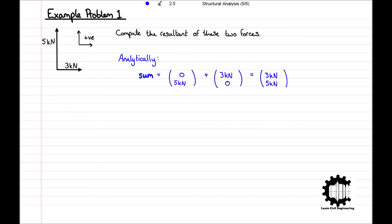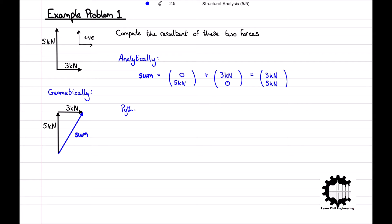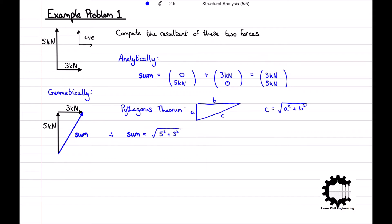We can now use this to calculate the magnitude of the resultant force. Geometrically, the steps we have just taken look like this, where the tail of the 3kN force is placed on the head of the 5kN force, resulting in a force from the open tail to the open head. To calculate the resultant, we use Pythagoras' theorem, where the hypotenuse of a right angle triangle is equal to the square root of the adjacent side squared plus the opposite side squared. Therefore, the resultant of these two forces is equal to the square root of 5 squared plus 3 squared, which equals 5.831kN.